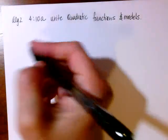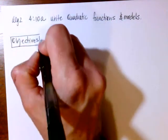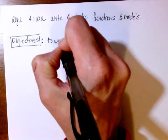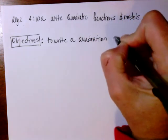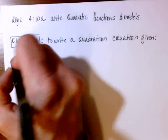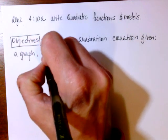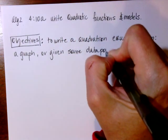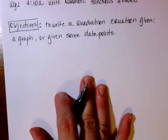Let me give you your objectives. Hopefully the lighting is a little bit better — I switched to a different room. Our objectives are going to be to write a quadratic equation given a couple of different situations: given a graph and/or given some data points. That is our primary focus for today — we will write an equation given either the graph or some data points.